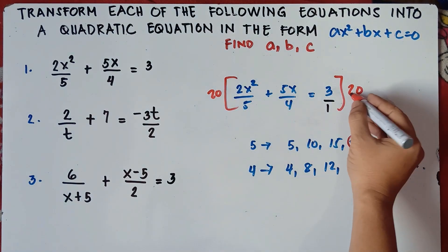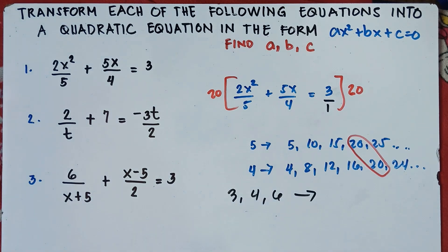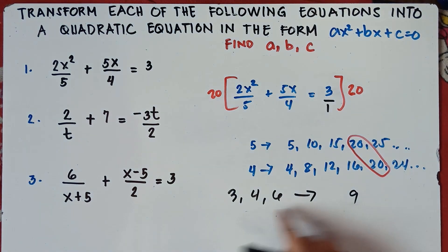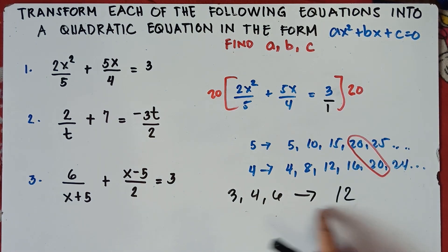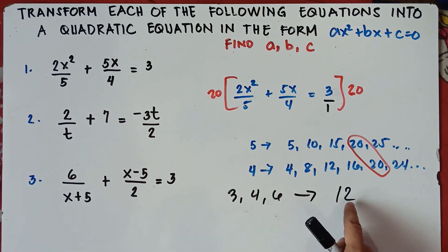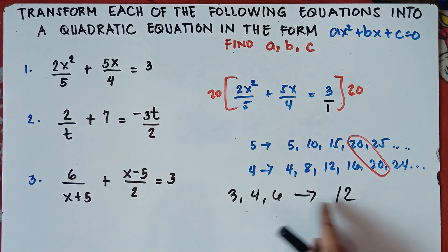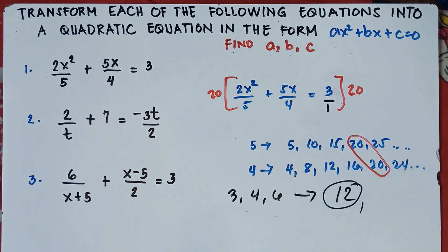For example, let's find the LCM of 3, 4, and 6. Think of a number you can divide by 3, 4, and 6. If we use 8, we cannot divide it by 3. If we use 9, we can divide by 3 but not by 4. If we use 12: 12 divided by 3 is 4, 12 divided by 4 is 3, and 12 divided by 6 is 2. So the LCM of 3, 4, and 6 is 12.